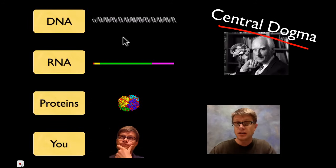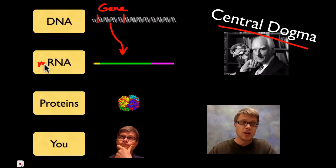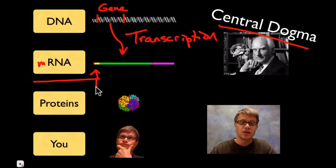Basically what we do is we take the DNA. DNA is going to have sections of it which are called a gene. And the gene is going to code for a specific protein. And so basically we'll copy down that gene into messenger RNA. All of this is going to take place in the nucleus. And this down here is going to take place in the cytoplasm.